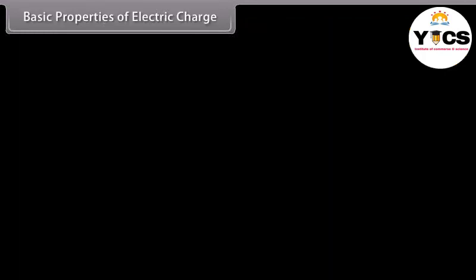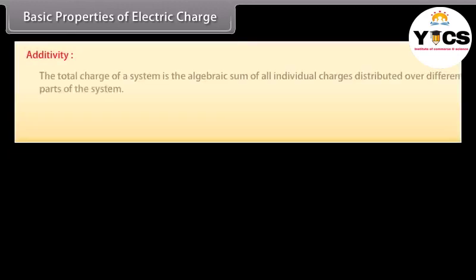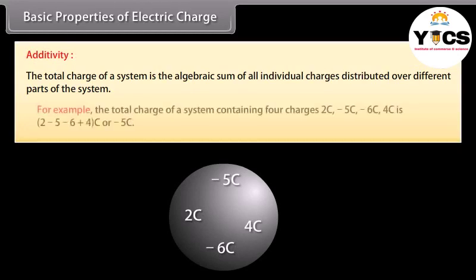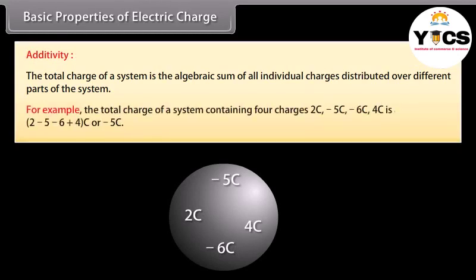Basic properties of electric charge — Additivity: The total charge of a system is the algebraic sum of all individual charges distributed over different parts of the system. For example, the total charge of a system containing four charges — 2 C, minus 5 C, minus 6 C, and 4 C — is equal to minus 5 C.